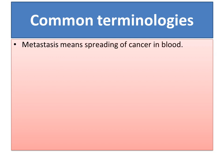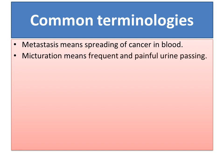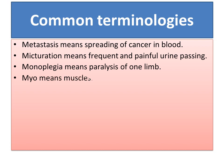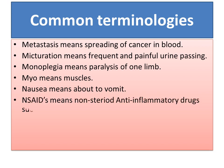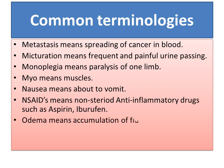Metastasis means spreading of cancer in the blood. Micturition means frequent and painful urine passing. Monoplegia means paralysis of one limb. Myo means muscles. Nausea means about to vomit. NSAIDs means non-steroidal anti-inflammatory drugs, such as aspirin, ibuprofen, and diclofenac.